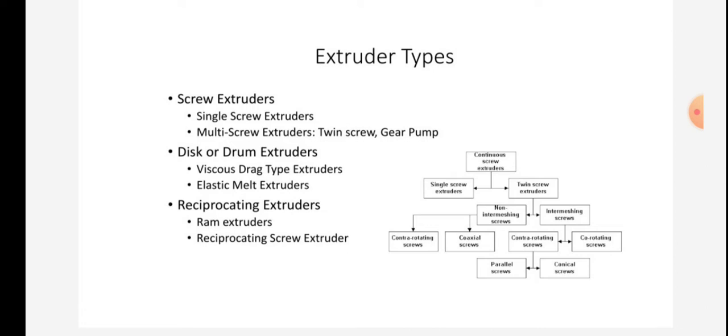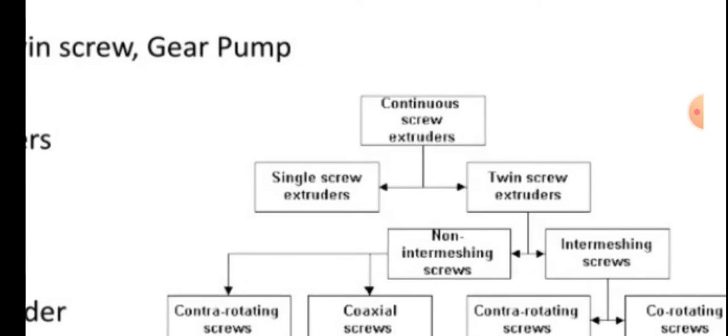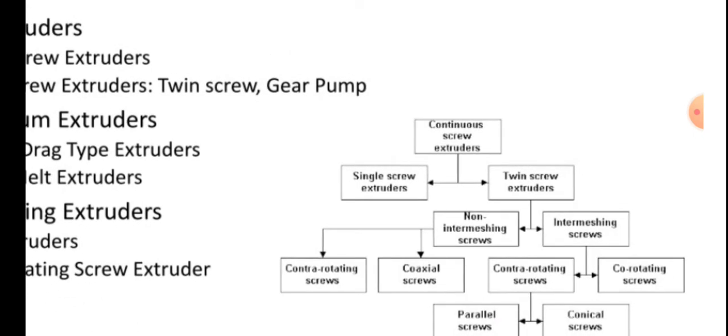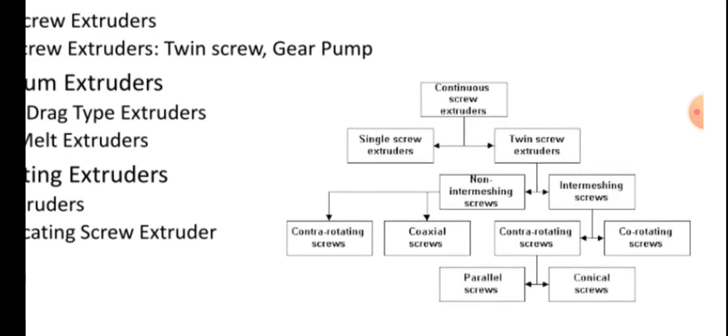Continuous extruders are classified into two types: single screw extruders and twin screw extruders.